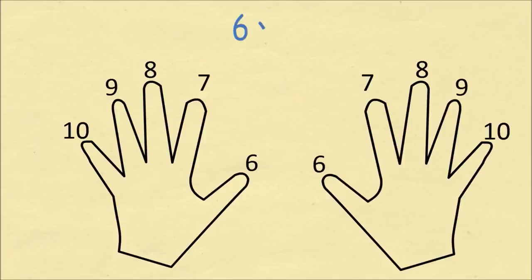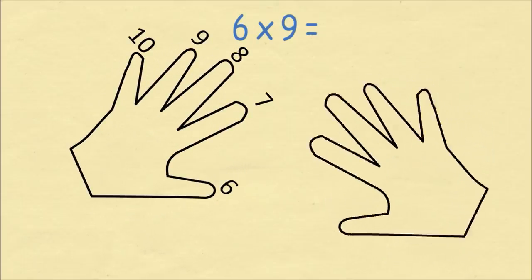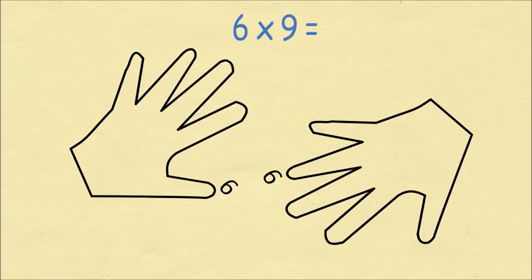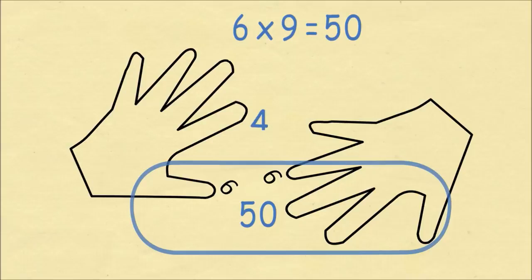You can use this procedure anytime you're multiplying two numbers between 6 and 10. Let's do another example of 6 times 9. We'll rotate our left hand so that we are having the number 6, and we're going to rotate our right hand to line up the number 9. We now count the number of fingers that are below the fingers that are touching, including the fingers that are touching. So we have one finger on the left hand and four on the right hand, which becomes five fingers, and this is 50 because the fingers below are always counted as tens.